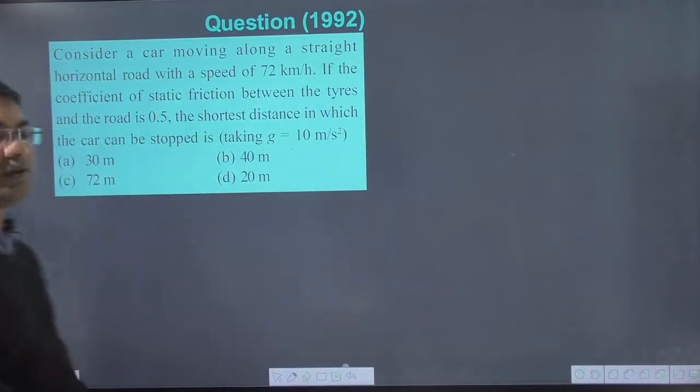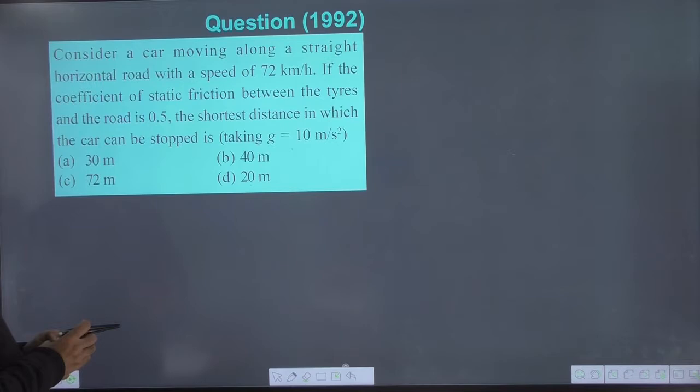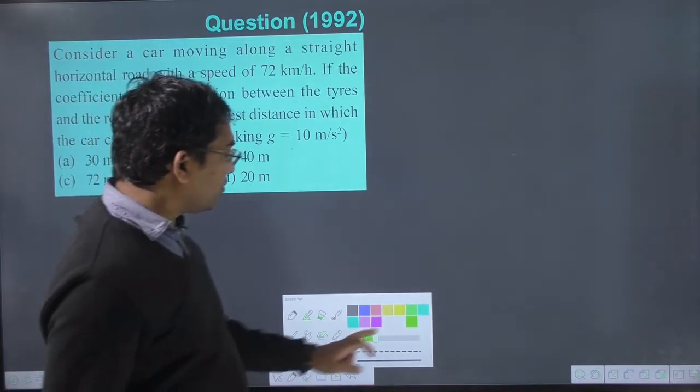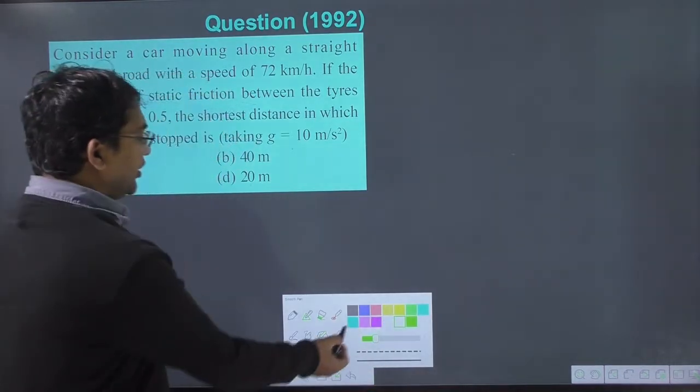Consider a car moving along a straight horizontal road with a speed of 72 km per hour. If the coefficient of friction between the tires and the road is 0.5, find the shortest distance in which the car can be stopped. This question can be solved using the work-energy theorem.